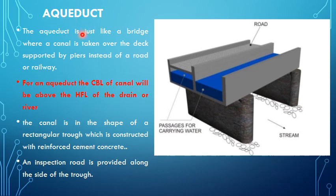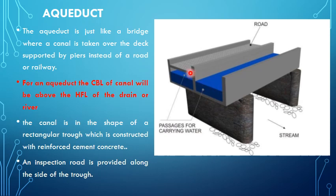First of all, let's recollect what an aqueduct is. An aqueduct is just like a bridge — we need to take a canal over a natural stream. It will be supported on piers and will have a frame for inspection. This section is known as the trough of the aqueduct, and it may be divided into a number of channels.